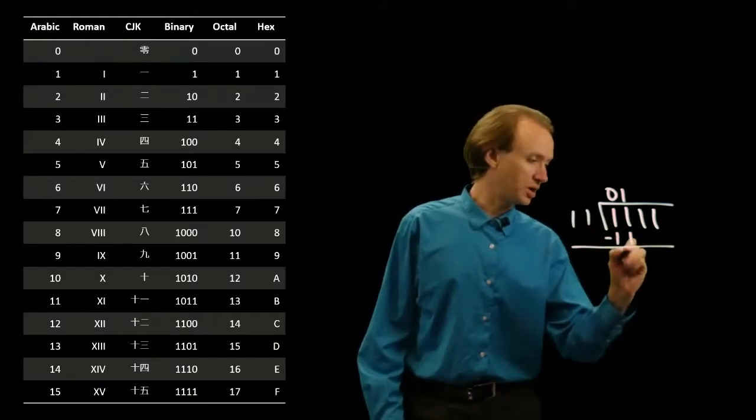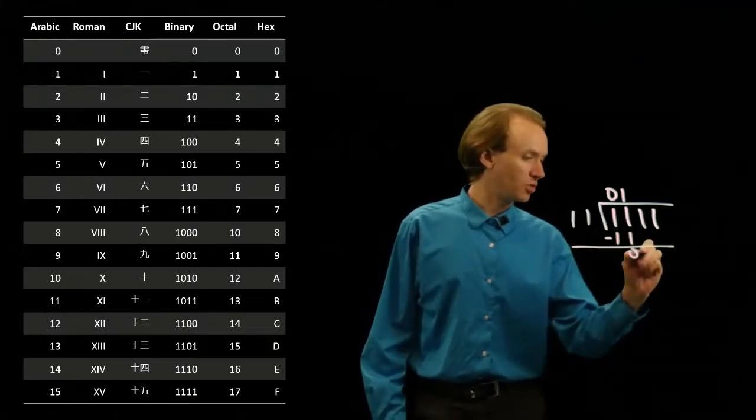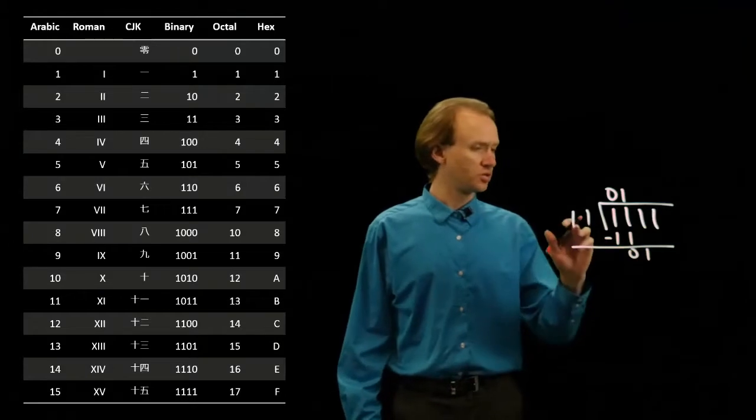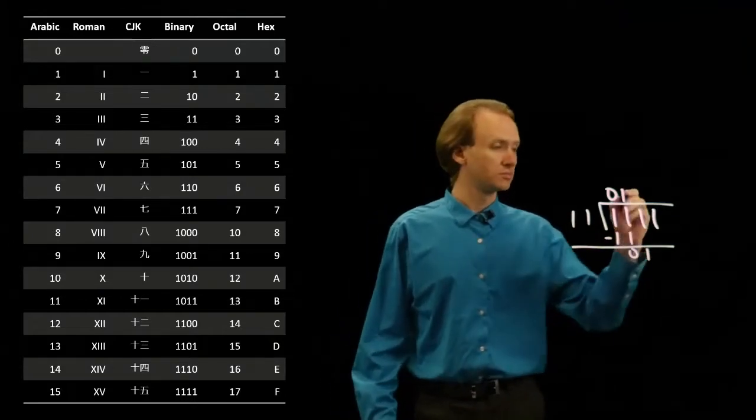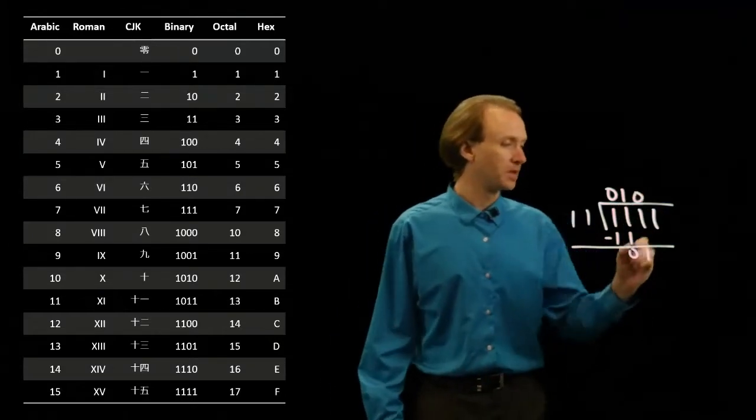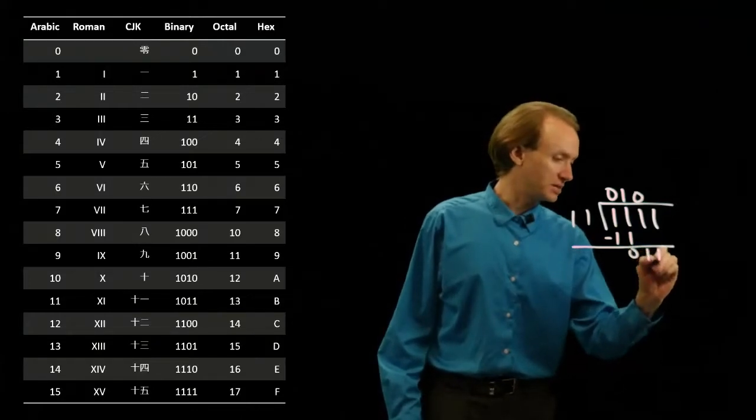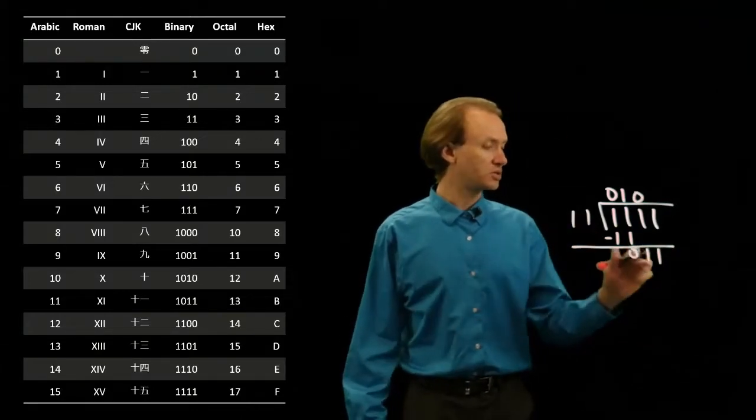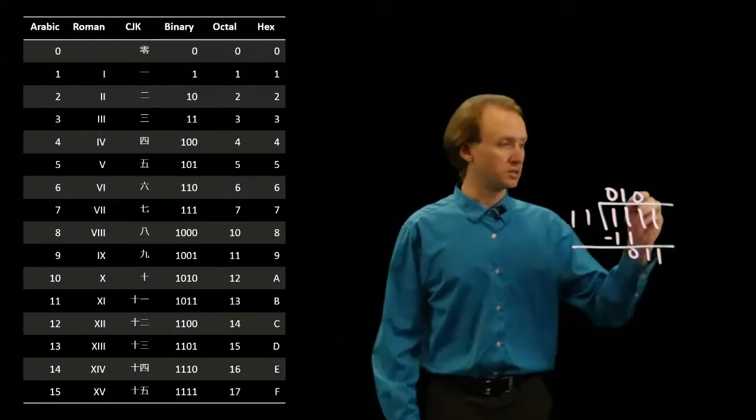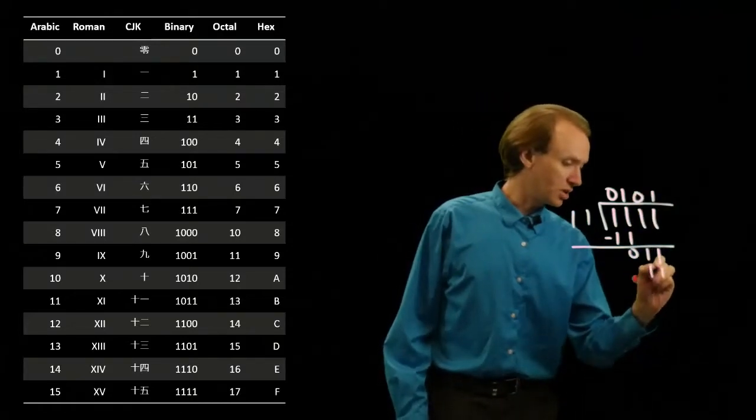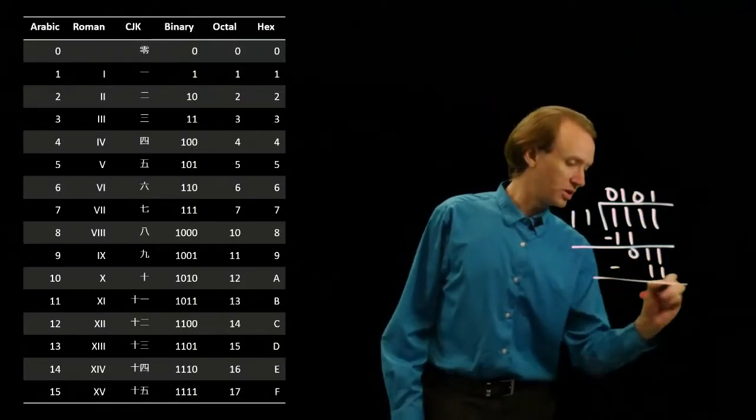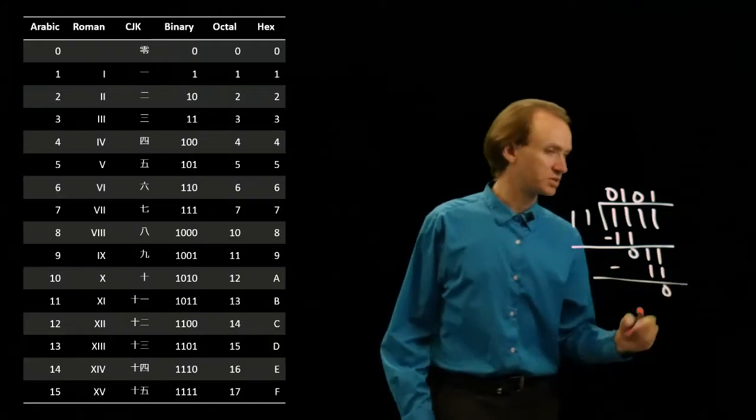Now if I do this subtraction I'm left with 0 and I can pull down a 1. So 11 doesn't go into 1 so I have to write down a 0 and I pull down the next bit. Now 11 does go into 11, goes in exactly one time. So I write down 11 to my subtraction and I'm left with 0.